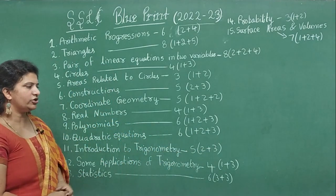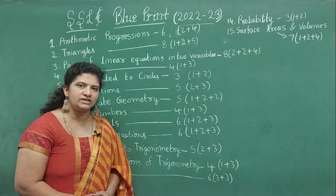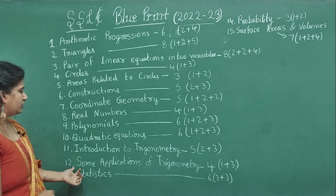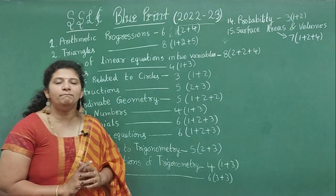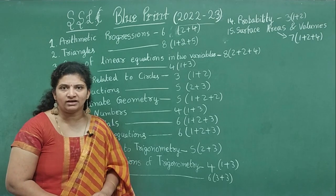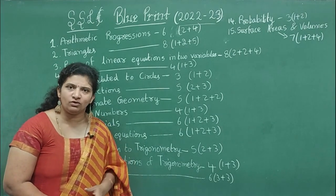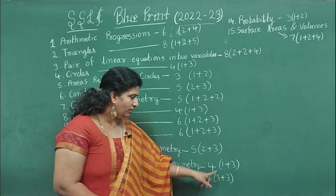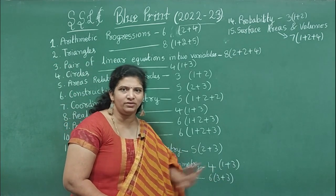Eleventh chapter, Introduction to Trigonometry - 5 marks. We can expect one 2 marks question and 3 marks question. Twelfth chapter, Some Applications of Trigonometry - compulsory we can expect 4 marks. Either they may give you one single question or they may split as one bit and 3 marks question.